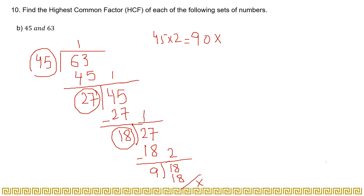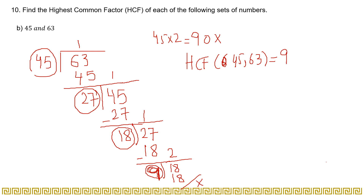Since we got remainder 0, we stop. The last divisor is the HCF. So the HCF of 45 and 63 is 9. This completes the division method for this example.